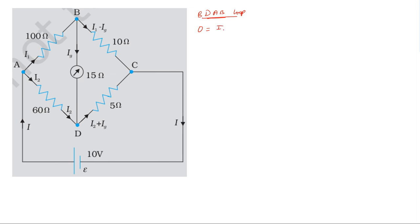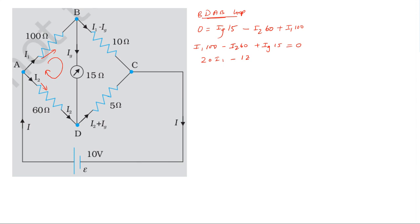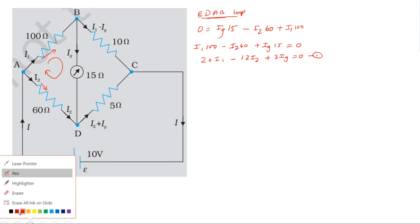For the first loop, considering the direction of current traversal: if traversing in the direction of current, potential is positive. The equation becomes: minus i2 into 60 plus iG into 15, and i1 into the respective resistance, giving the first loop equation equal to zero.